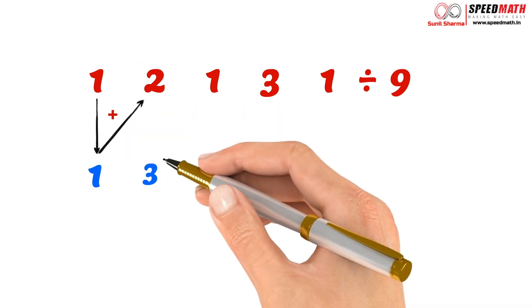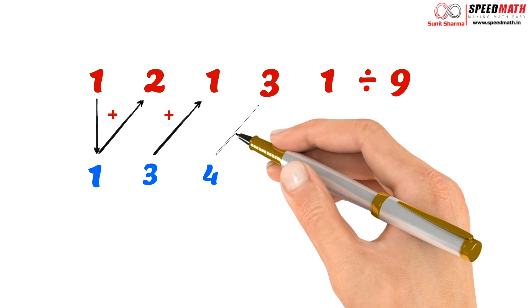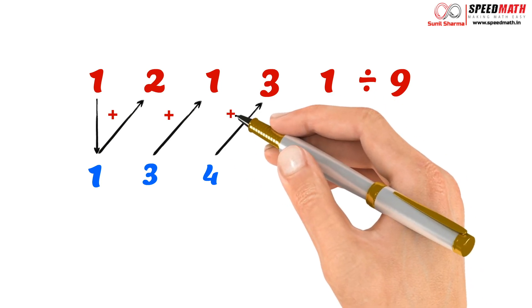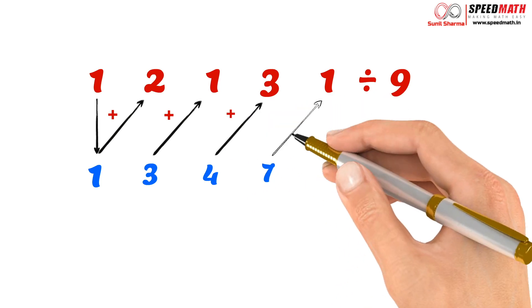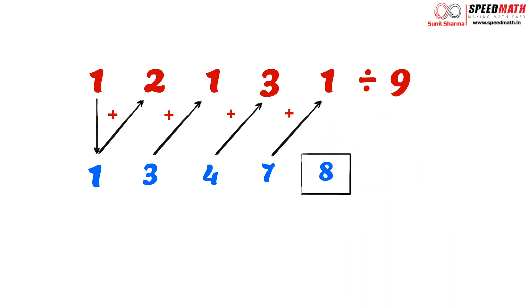So 1 plus 2 is 3, which we are going to write below 2, and we are going to repeat this process till we reach the last digit. So 3 plus 1 is 4, and then 4 plus 3 is 7, and 7 plus 1 is 8. Friends, the last digit is always considered as the remainder, so here 8 will be the remainder and the remaining digits are the quotient. It is so very easy, right?